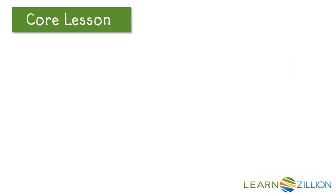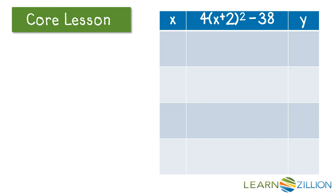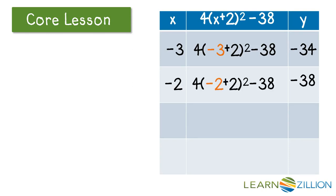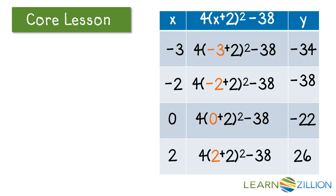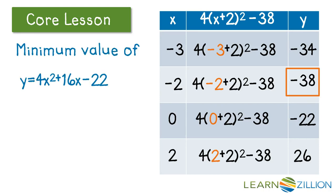Let's look at this with a table of values and pick a couple of numbers for x. If you plug in negative 3, we're going to get negative 34, substituting negative 2 for x will give us negative 38, 0 gives us negative 22, and 2 will give us 26. Here's our minimum value right here. So, we can conclude that the minimum value of y equals 4x squared plus 16x minus 22 is negative 38 when x equals negative 2.